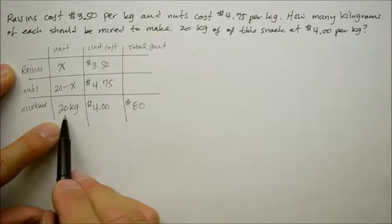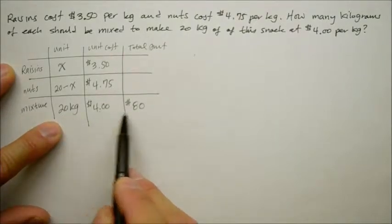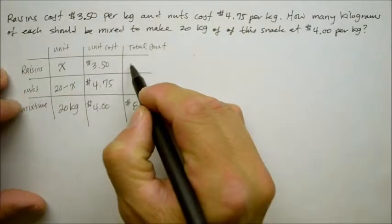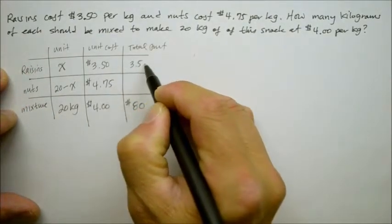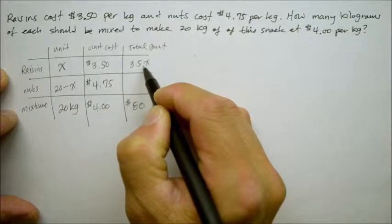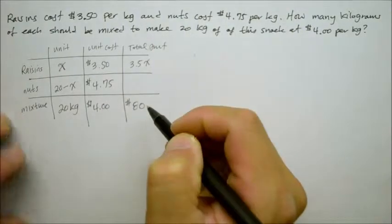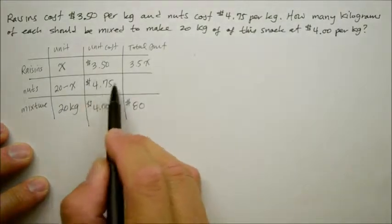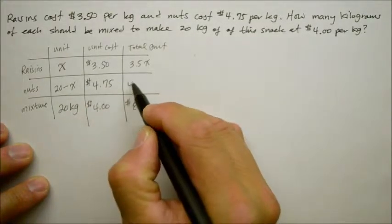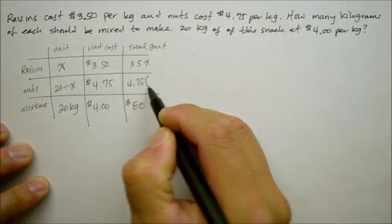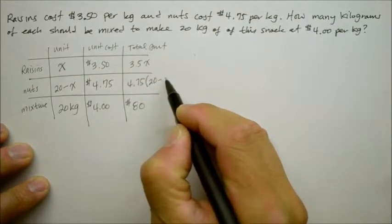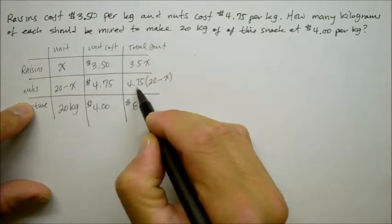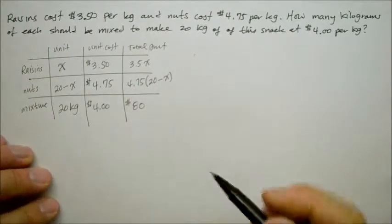As a result, just like the way we multiply 20 times 4 is 80, we could go X times 3.50. And since it's a variable X, we just say 3.5X. Then here, 20 minus X times this unit cost is going to be 4.75 times 20 minus that unknown raisins. Take that out and whatever remains is the nuts. Multiply 4.75, that's what that means.